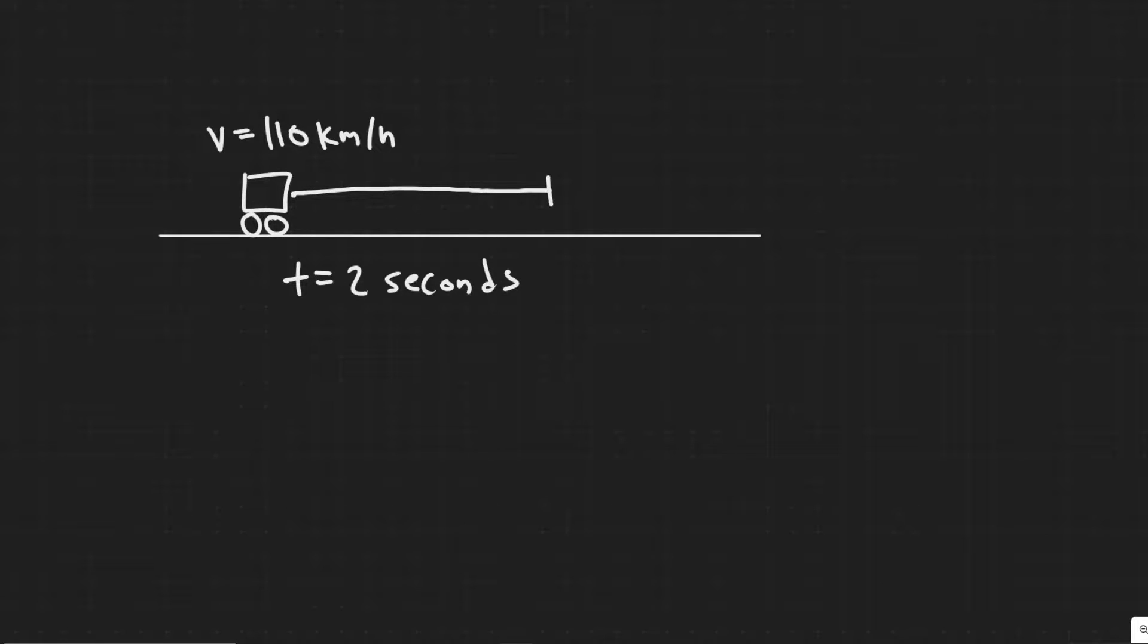And so we can denote that by this variable delta x, which basically delta just means the change in and x is your position. So you can imagine this is the x-axis. So we're basically just finding how far our change in the x is, which is basically your distance.